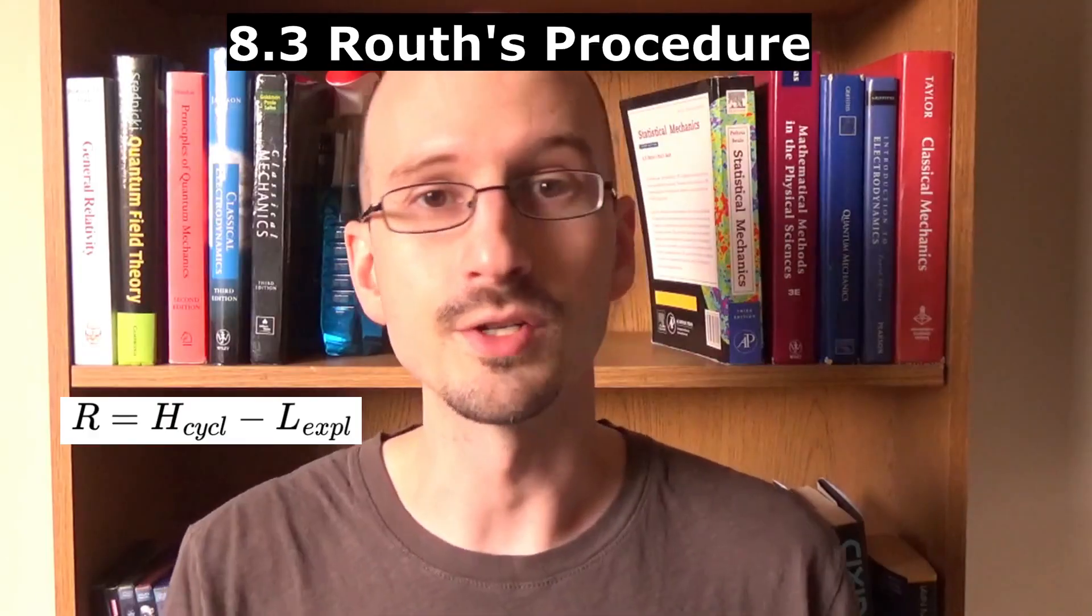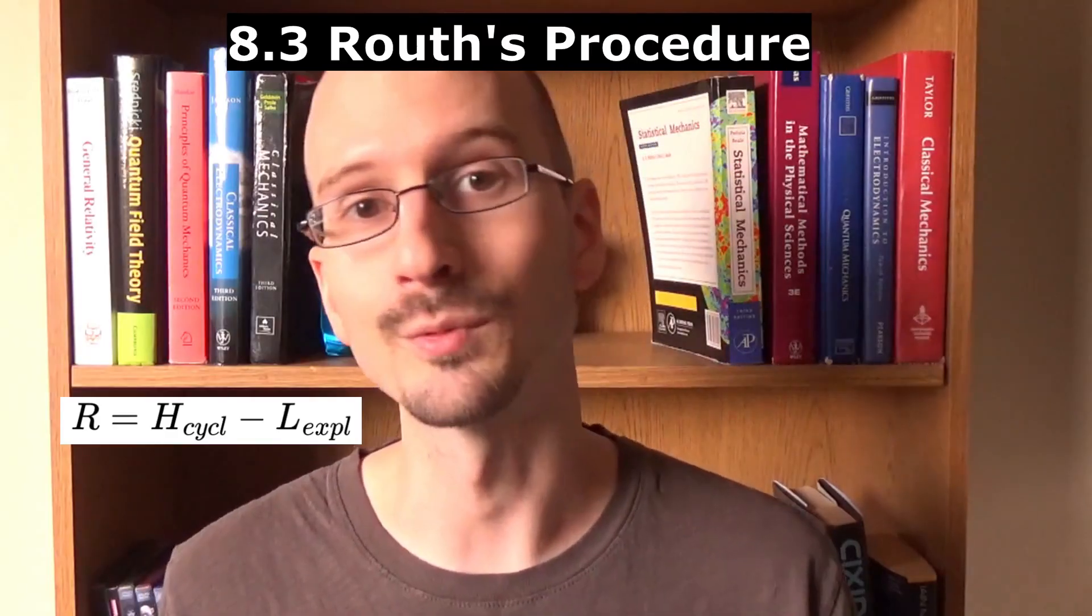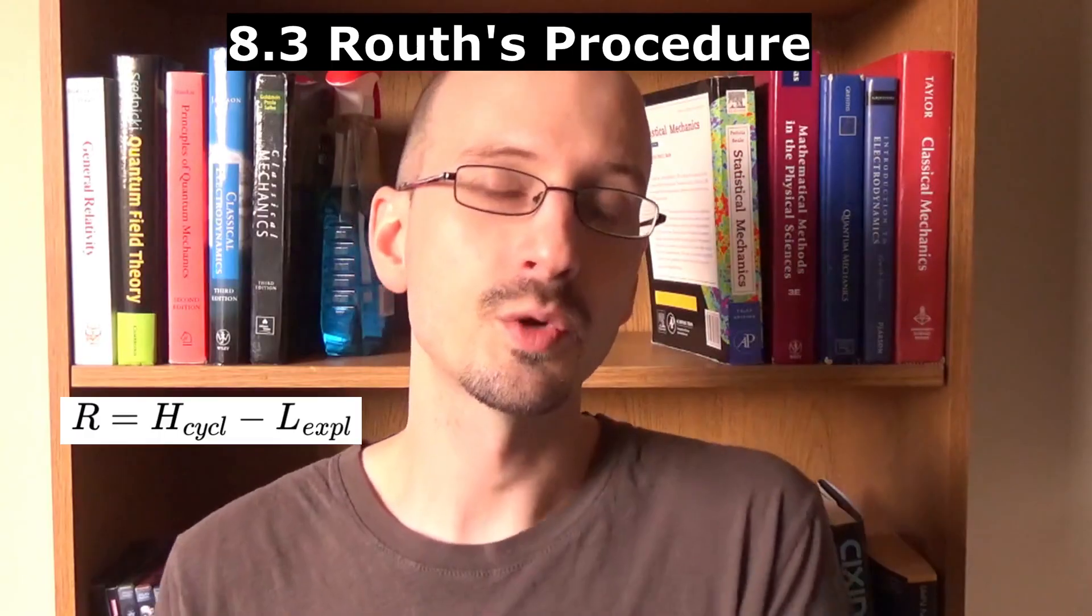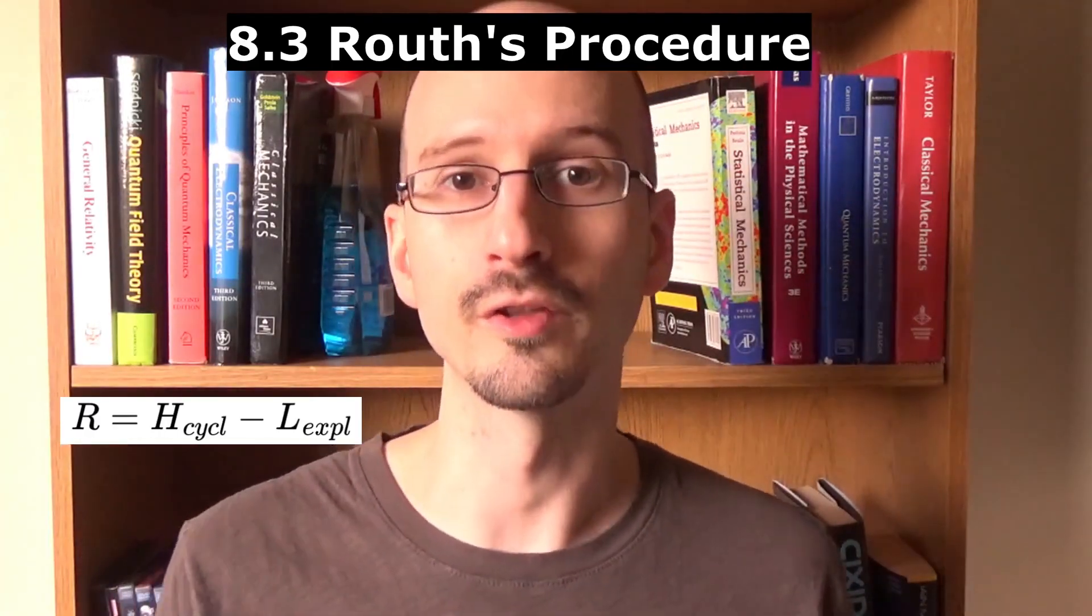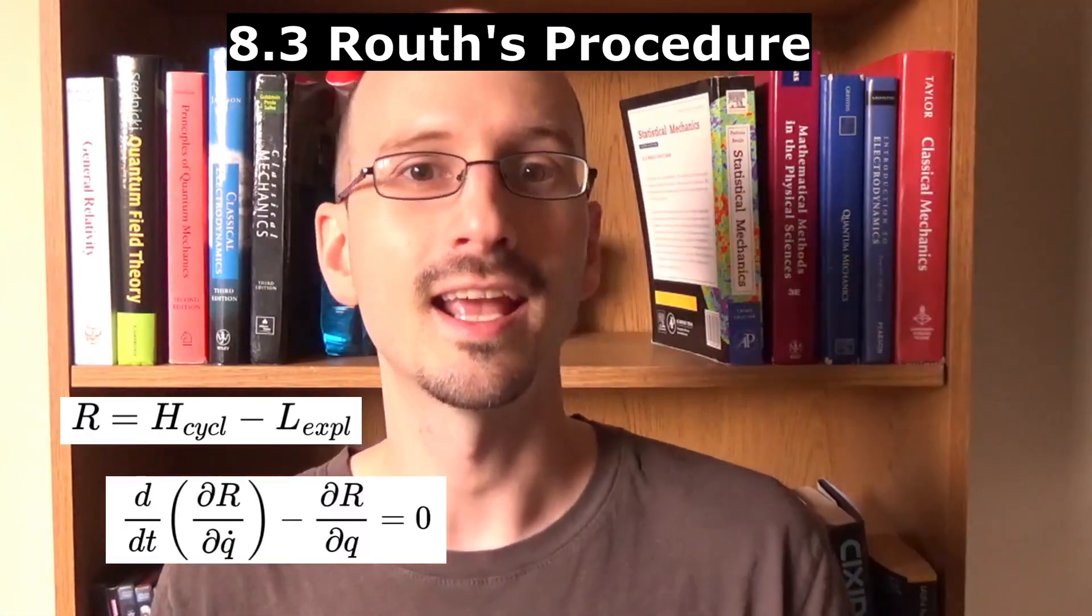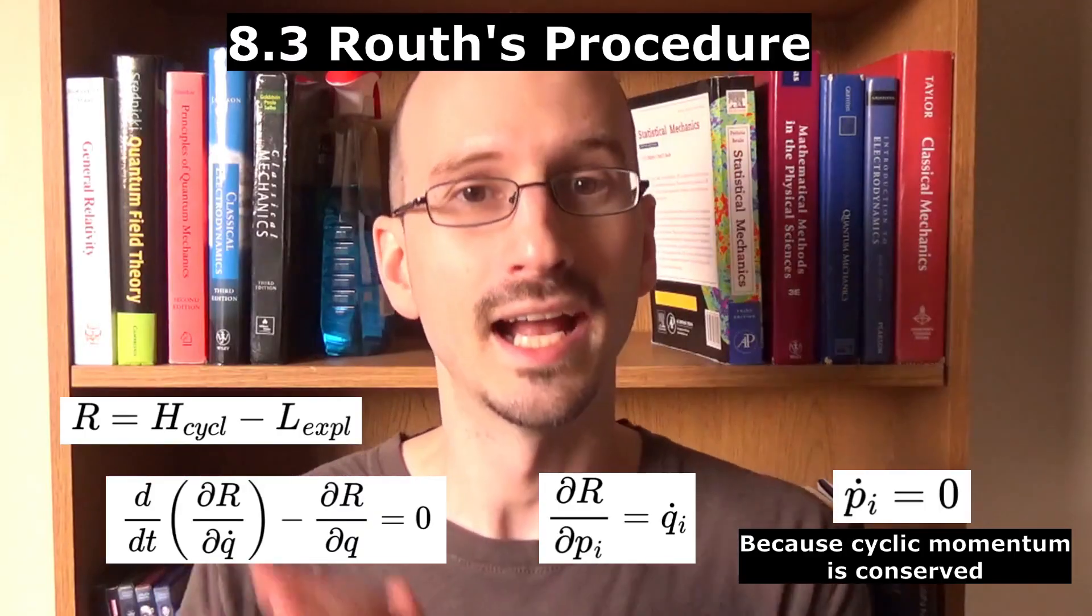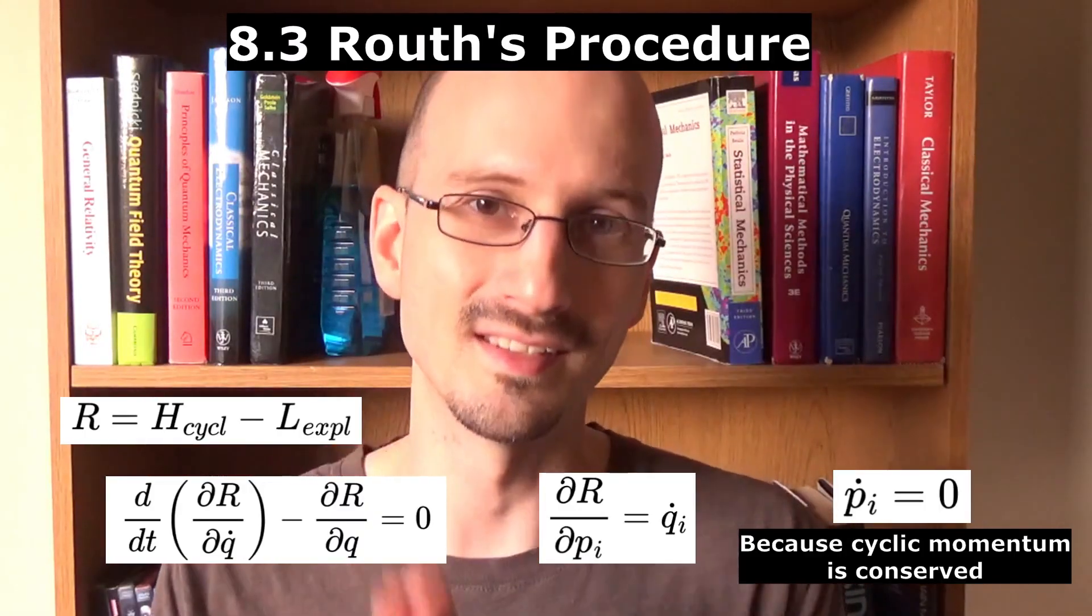When we do this, there's no overlap between what's left of the Hamiltonian and what's left of the Lagrangian. So we can put the entire Routhian through Lagrange's equations and Hamilton's equations, and each of those equations produces zero, except when it's most convenient.